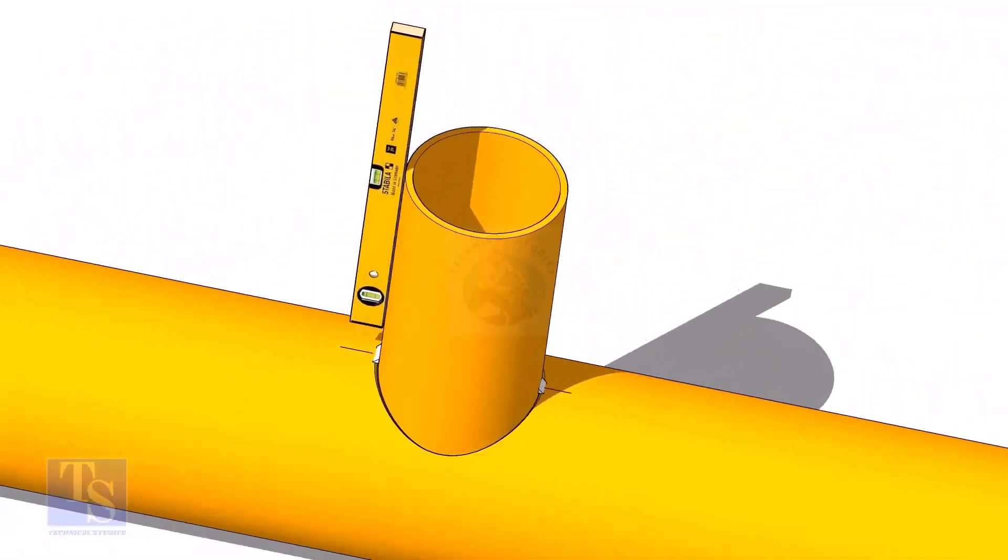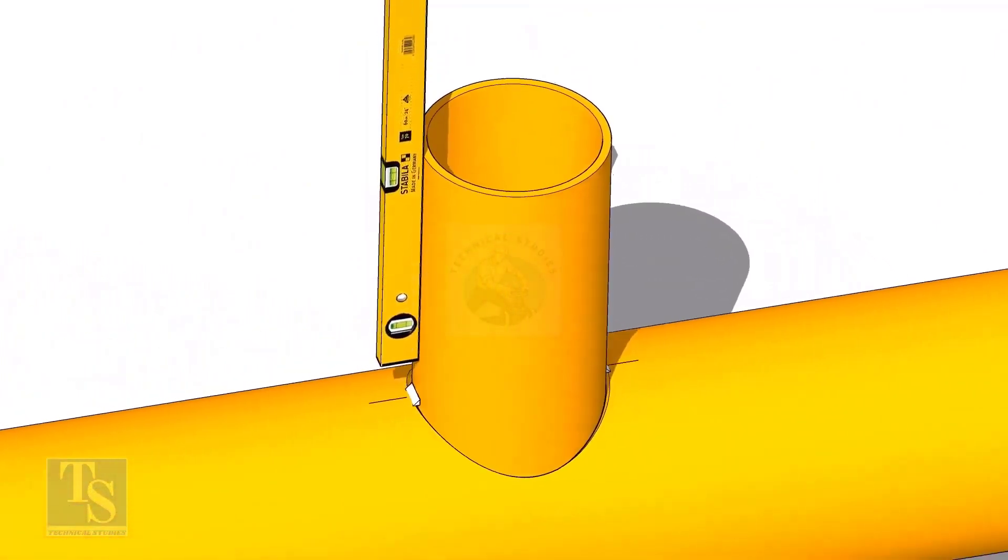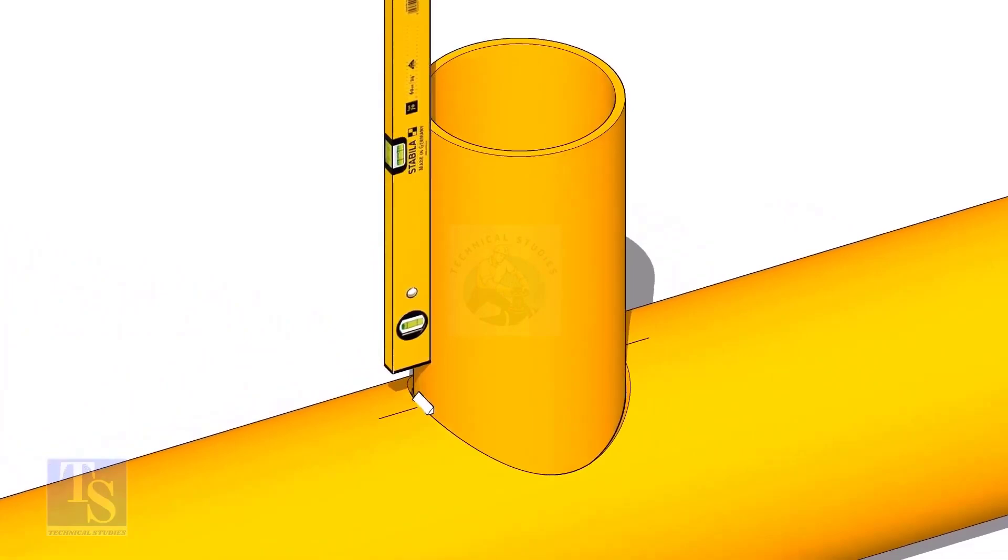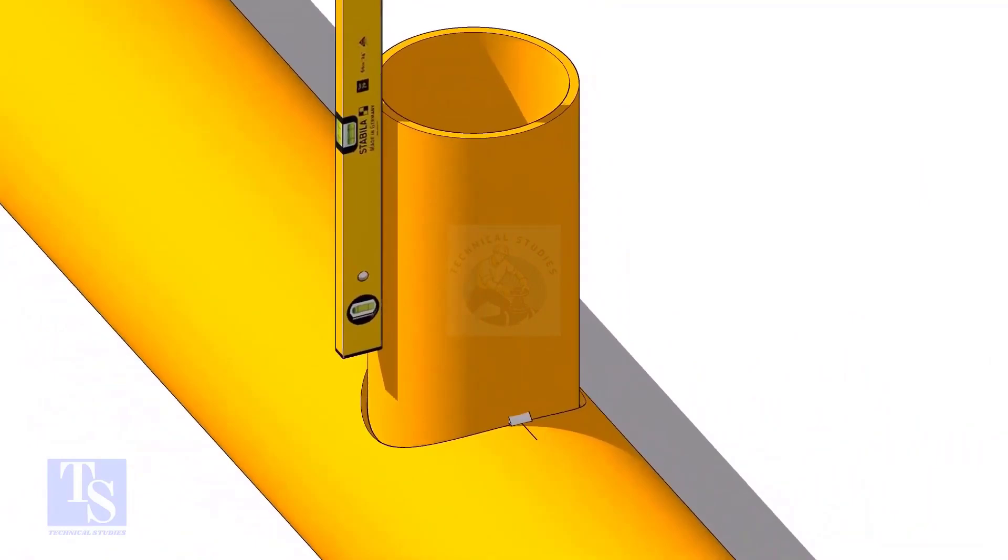Tack weld at one side and check the level of the branch. If the level is correct, tack weld on the other side. Make level of the other face of the branch and tack weld on both sides.